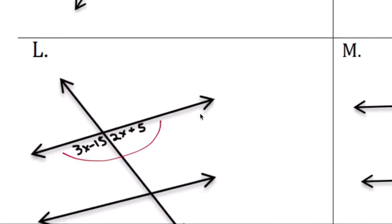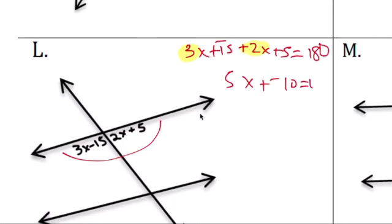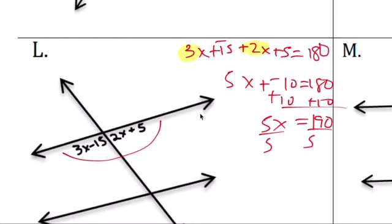These add up to 180, so 3x minus 15 plus 2x plus 5 equals to 180, get 5x plus a negative 10, 180 add 10. And then 5x divided by 5, x equals 38 degrees. Okay.